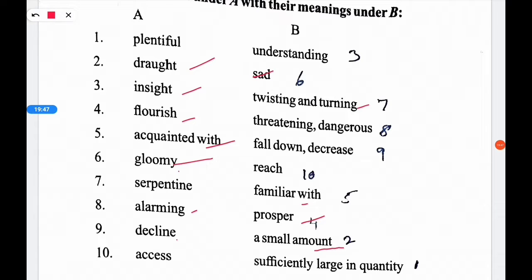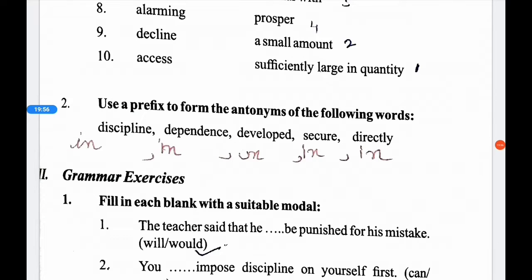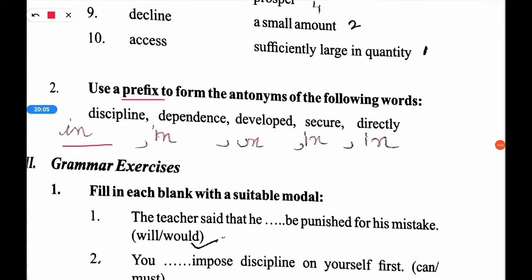Excess means to reach or access. Now, choose a prefix to form the antonyms of the following words — remember to use prefixes such as im-, in-, un-, or an-. For example: discipline becomes indiscipline, dependence becomes independence, secure becomes insecure, and directly becomes indirectly.